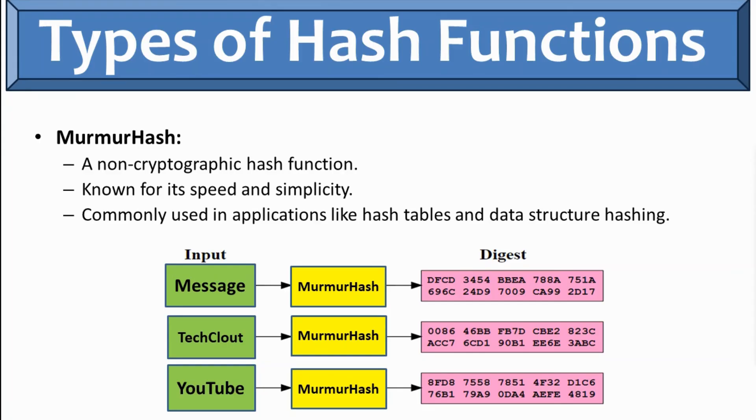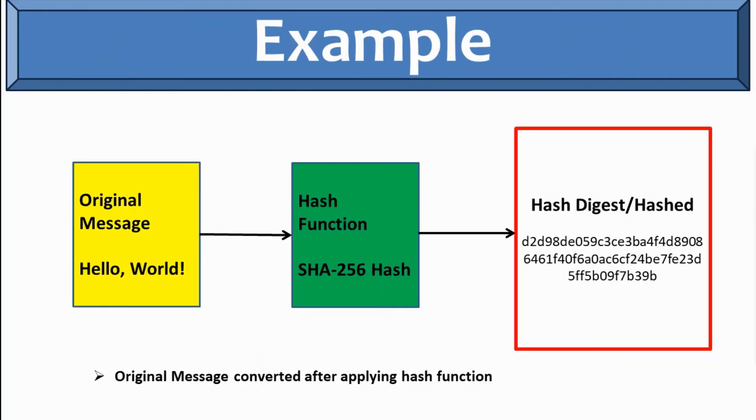So these are the types of hash or message digest. Let's now understand as an example. So here on the screen we can see we have original message as 'Hello, World!' and the hash function where we are using SHA-256 hash algorithm. So once a message or data is hashed, we can simply say it can be converted in an unreadable format or unreversible format.